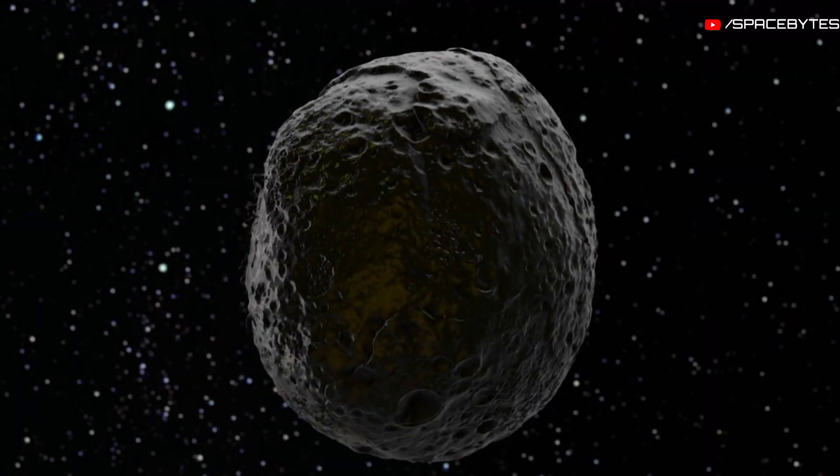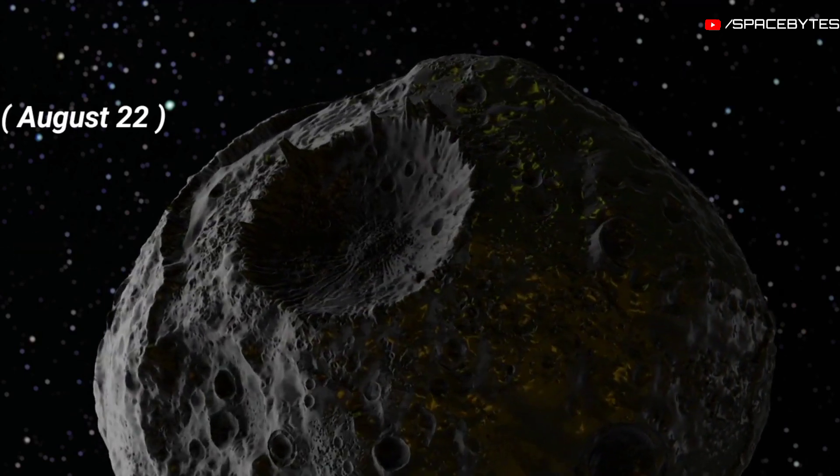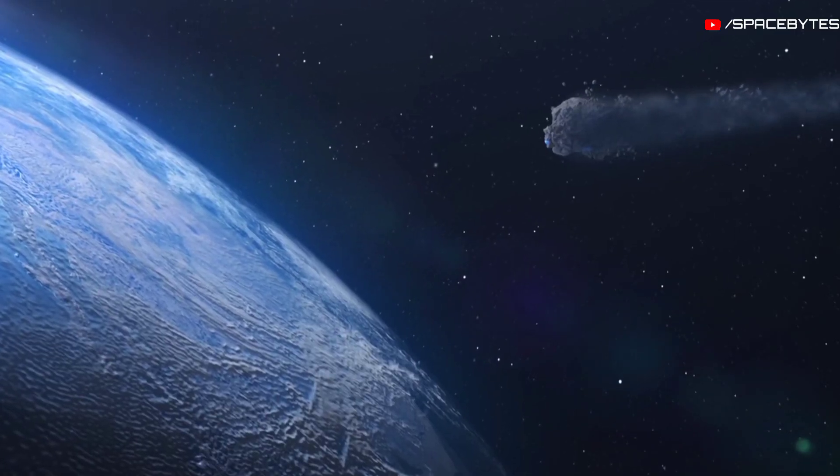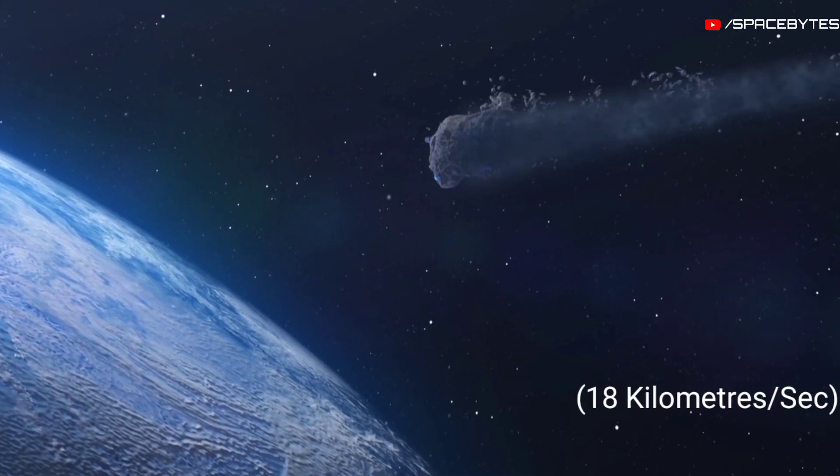This year, asteroid 2020 QW3 will pass past Earth on August 22nd at a distance of 5.39 million kilometers at a speed of 18 kilometers per second.